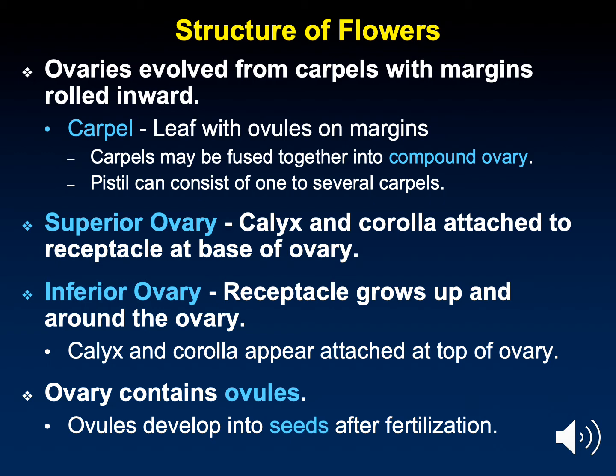Where the ovary sits may differ between different species of flowers. If the ovary sits on top of the petals, it is referred to as a superior ovary. However, if the ovary occurs below the petals, it is referred to as an inferior ovary. An example of a superior ovary would be in the buttercup family; an example of an inferior ovary would be the rose family, which includes apples and pears.